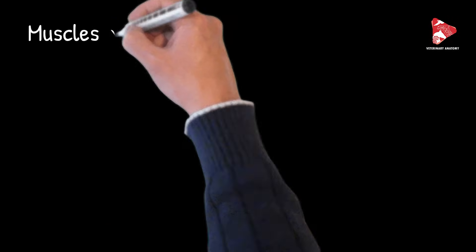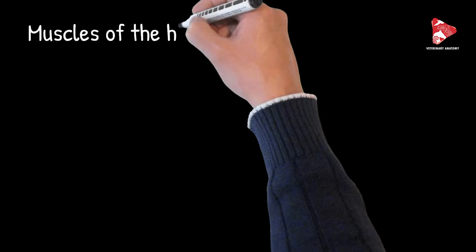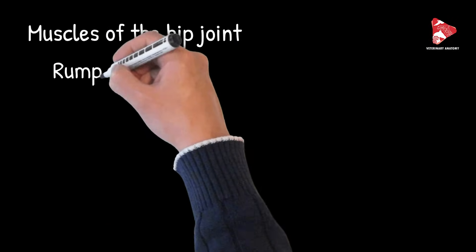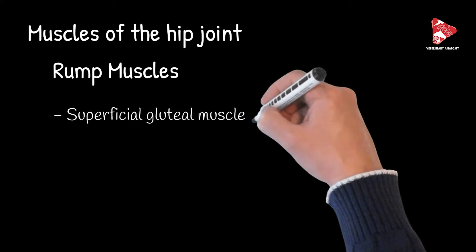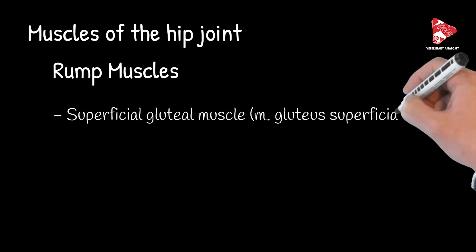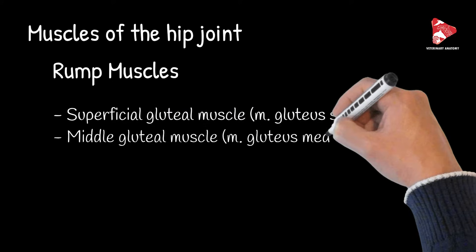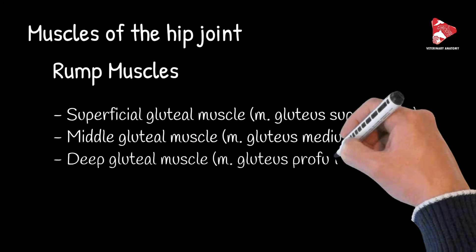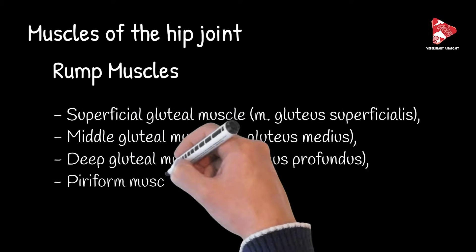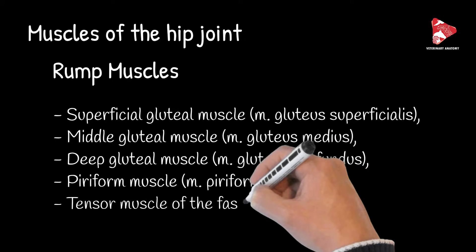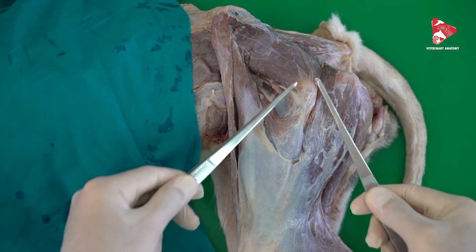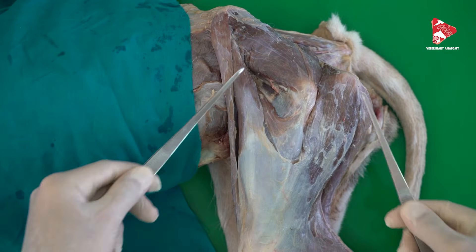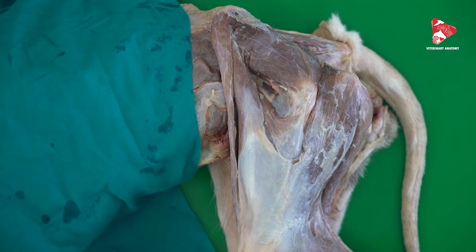In this video we will dissect some of the muscles of the hip joint, starting with the rump muscles, including the superficial gluteal muscle, the middle gluteal muscle, the deep gluteal muscle, the piriformis muscle, and the tensor muscle of the fascia lata. We have a lateral view of the hind limb of the dog.